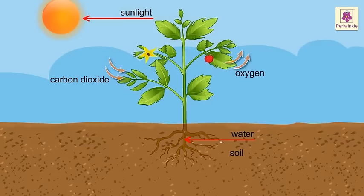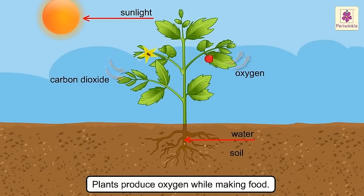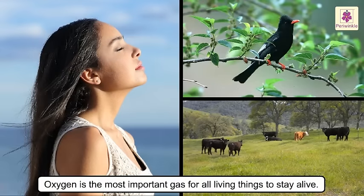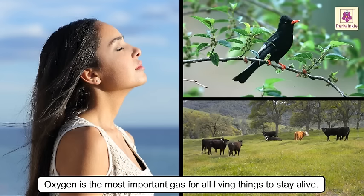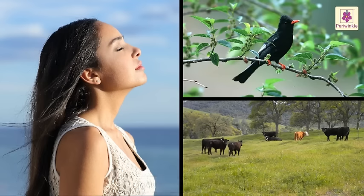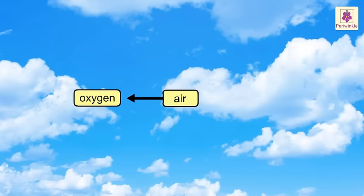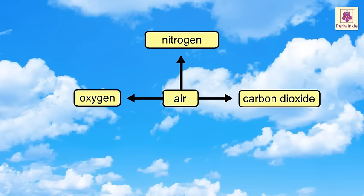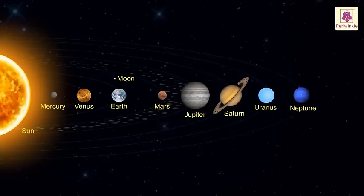One of the reasons why plants are so important to us is because they produce oxygen while making food. Oxygen is the most important gas for all living things, as it is needed to stay alive. It also keeps the air fresh. Along with oxygen, air also contains other gases like nitrogen and carbon dioxide.